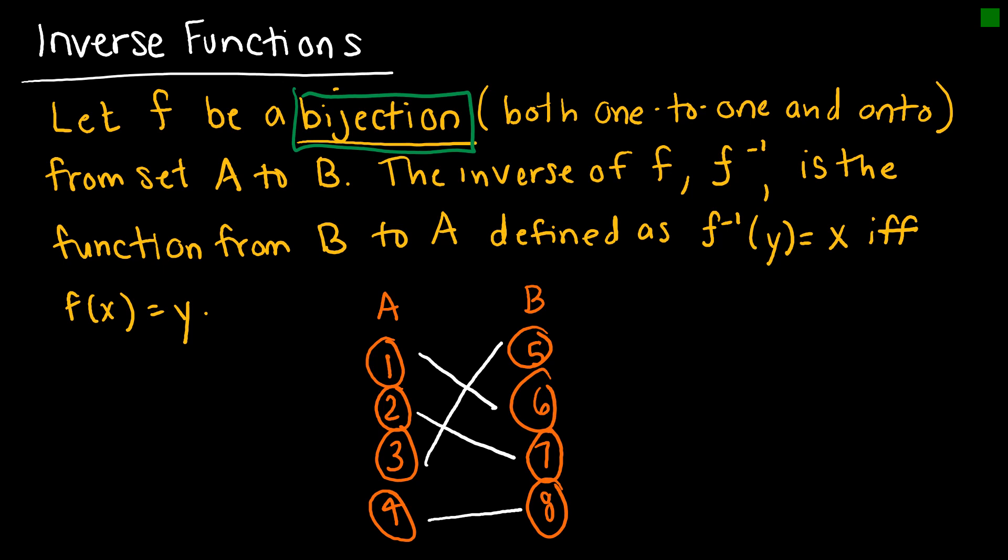looking at my example down here, this is onto because there are no elements of B that haven't been mapped to from set A. It is one-to-one because each of these elements is only mapped to one time. So it has to be a bijection.